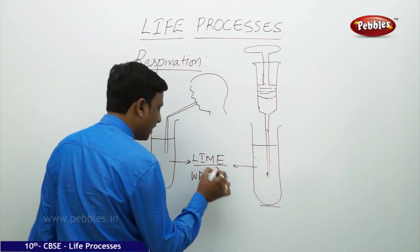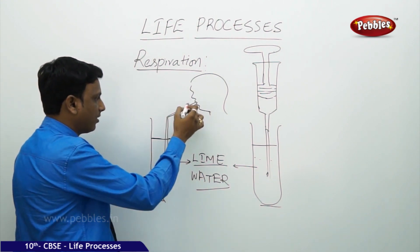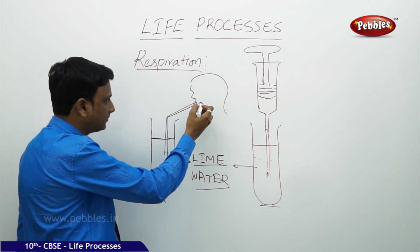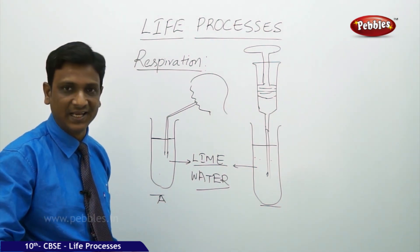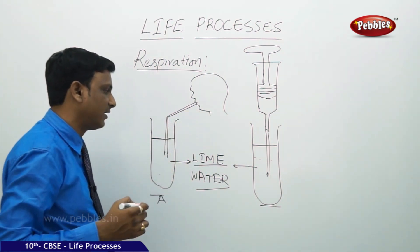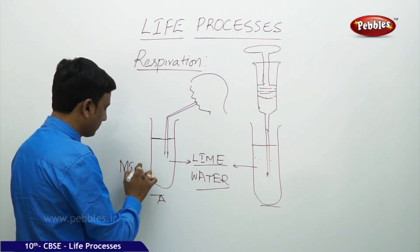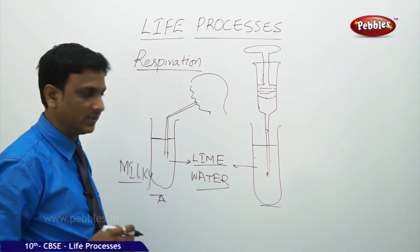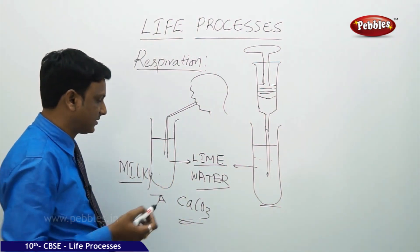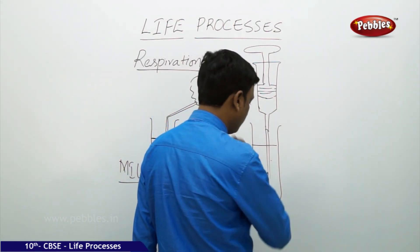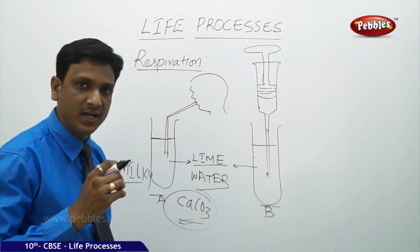In the first test tube, labeled A, place a straw and blow air through it. The air you blow comes from your lungs — it is exhaled air. As you slowly blow the exhaled air into the freshly prepared lime water, the lime water turns milky. This means lime water reacted with carbon dioxide to form calcium carbonate, CaCO3.